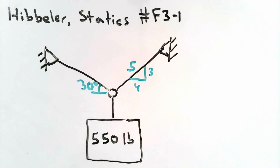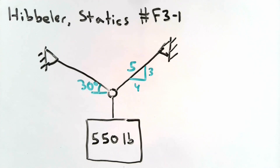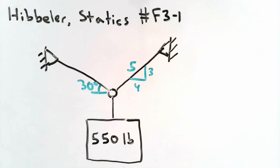Today we're going to look at problem F3-1 from Hibbler's statics textbook, 14th edition. This problem deals with coplanar force systems, and the chapter as a whole deals with equilibrium of a particle. We have a 550-pound crate being supported by three cables — one cable connected to a ring and two cables connected to that ring being supported by hinges. The question is to find the force in each of the supporting cables.